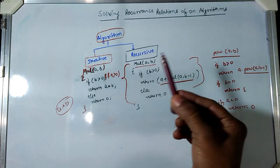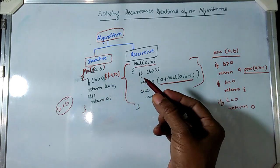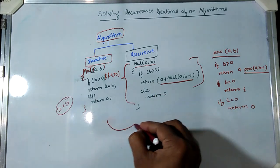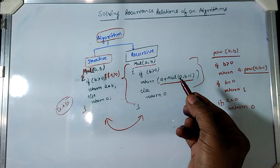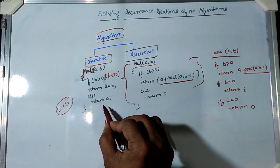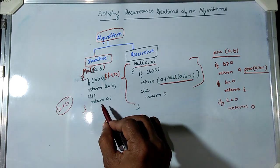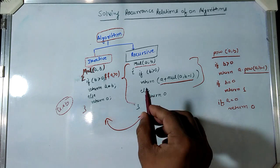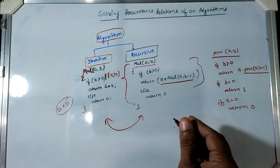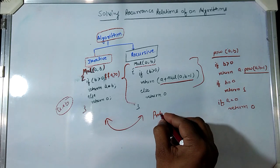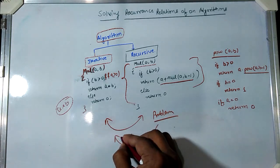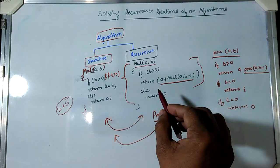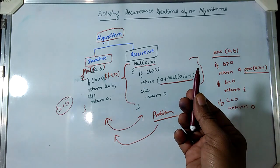Whenever a function calls itself, this type of function is called a recursive function or recursive procedure. For any problem, you can make the algorithm iterative or recursive and convert between the two forms. If you have an iterative procedure you can convert it to a recursive one, and vice versa.